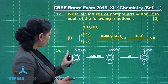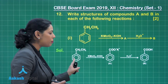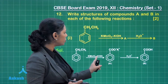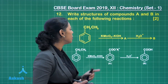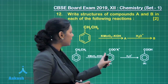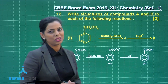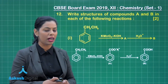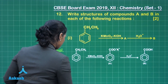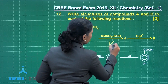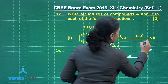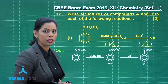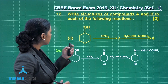For the first reaction: ethylbenzene treated with alkaline KMnO₄ gives potassium benzoate as product A. Further, when hydrolyzed in the presence of acid, you obtain benzoic acid as product B. Half mark for identifying compound A and half mark for compound B, giving 1 mark for this section.